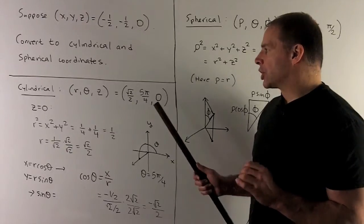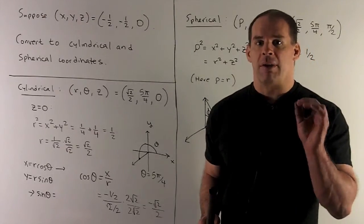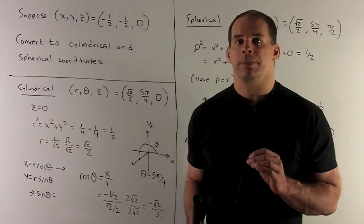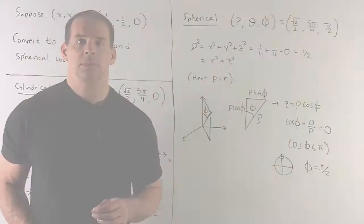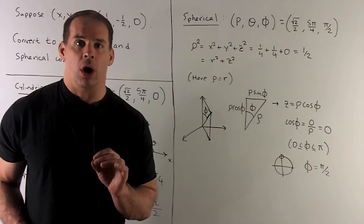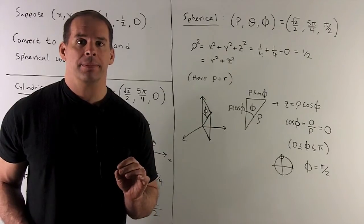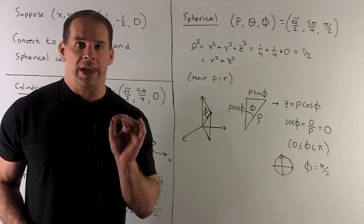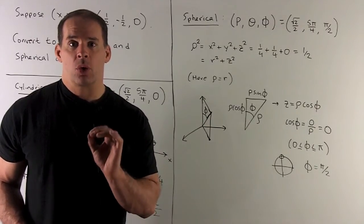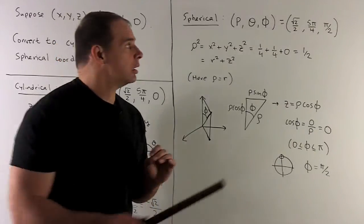So our cylindrical point is: square root of two over two, five pi-fourths, zero. The spherical coordinates are given by rho, theta, and phi. We get theta from the cylindrical coordinates as five pi over four.